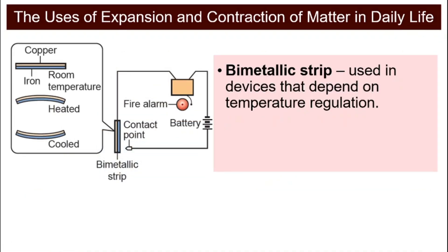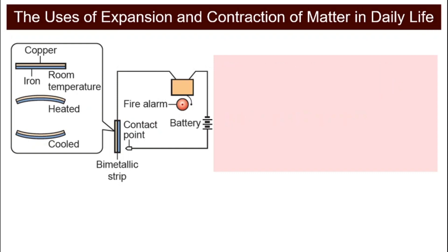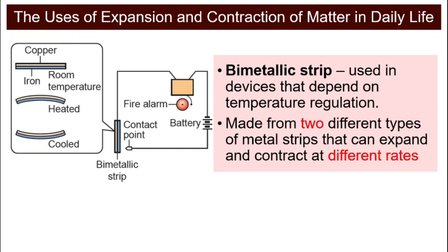Let's look at bimetallic strip. What is bimetallic strip? The word bi means two metallic strips. So the strip is made of two different metals. They are used in devices that depend on temperature regulation. For example, the fire alarm. They are made of two different types of metals because they contract and expand at different rates.